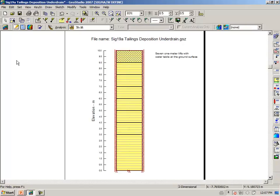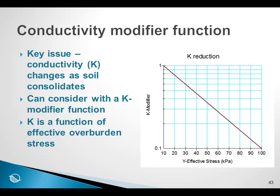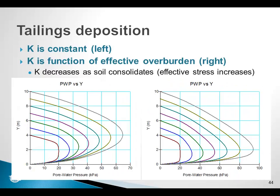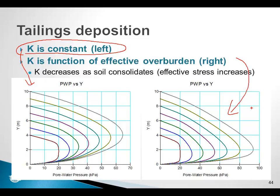Going back to the PowerPoint presentation, briefly discussing the effect of modifying the hydraulic conductivity with increasing effective stress — we have a situation where k is a constant, and then we have k as a function of the effective overburden stress. Near the bottom of the column, where the effective stress is the highest, we have a lower conductivity.